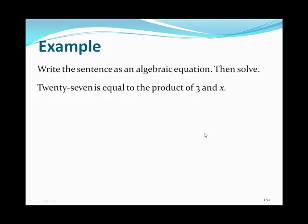One more problem: let's translate a sentence, write it as an algebraic expression, and solve. '27 is equal to the product of 3 and x.' So 27 on the left equals 3x. This is a multiplication equation, so we divide by 3 on both sides, giving x equals 9.